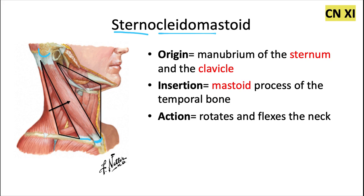All three of those together inform the name: sternum, 'cleido' — which also means clavicle or collarbone — and then mastoid, which is the mastoid process of the temporal bone. So all three of those together make up this very unique name. The action is to rotate and flex the neck.